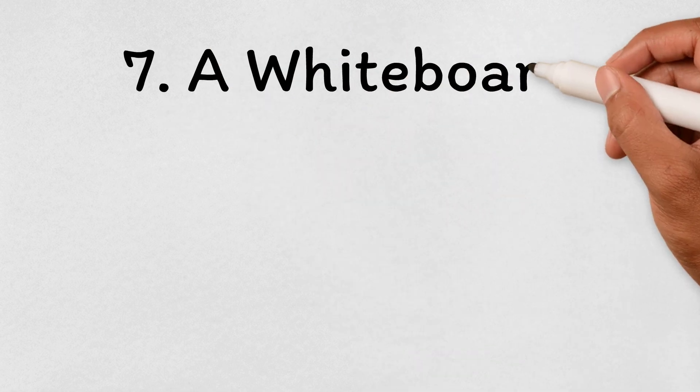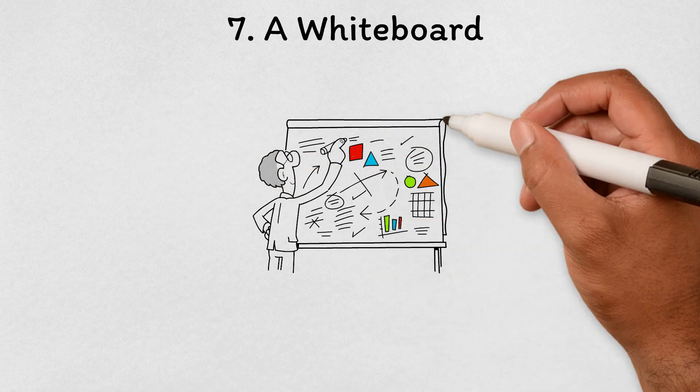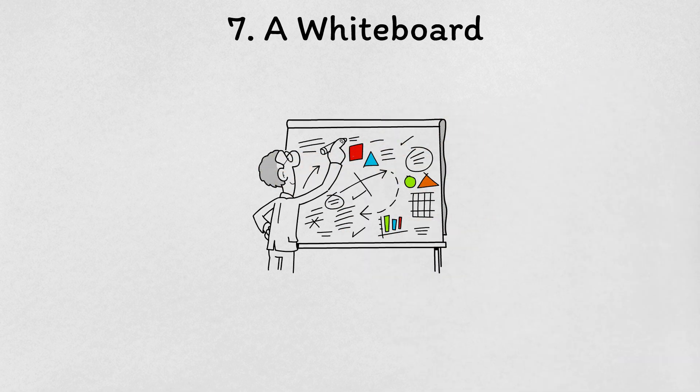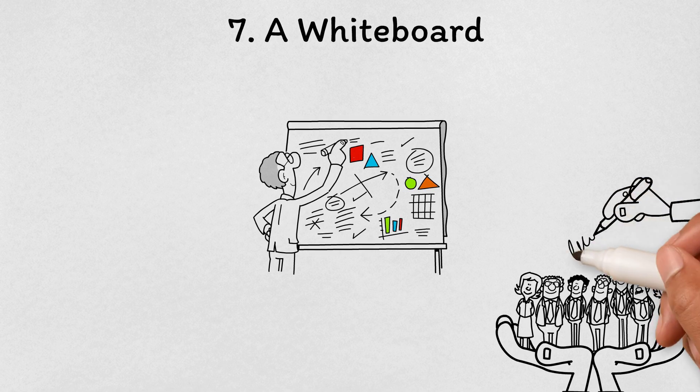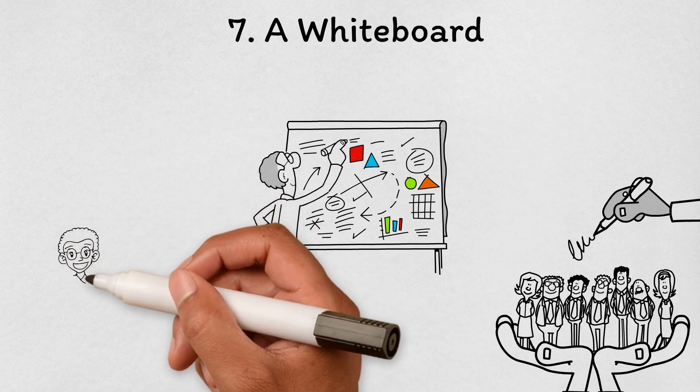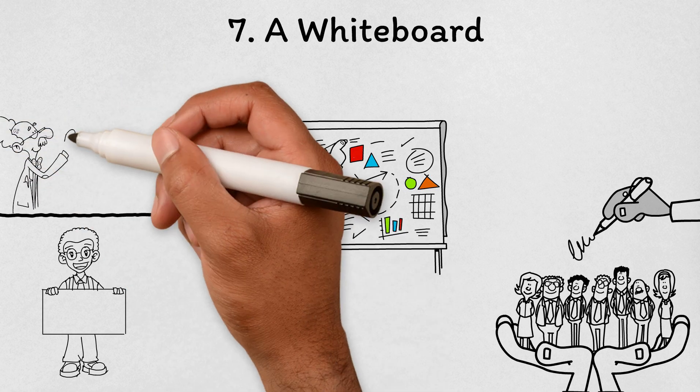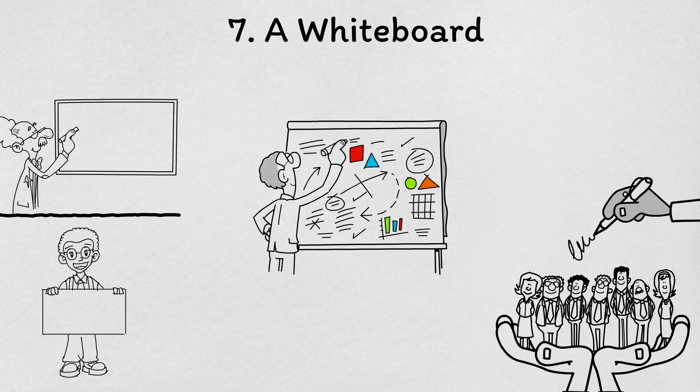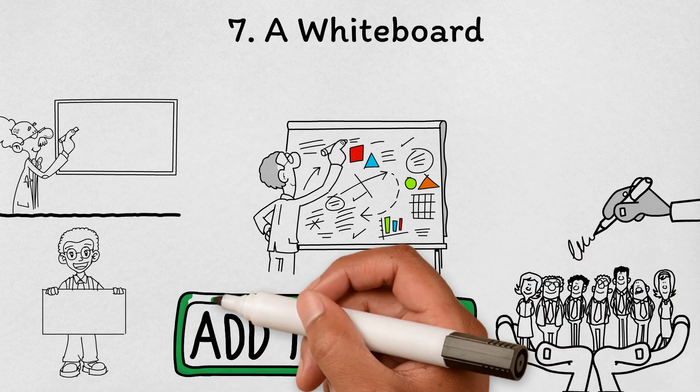A whiteboard. Whether you're brainstorming ideas, making to-do lists, or outlining a project, a whiteboard can be an incredibly useful tool for visualizing your thoughts and ideas. With a whiteboard, you have the freedom to write and draw freely, erase and revise as needed, and collaborate with others in real time. Plus, there's something satisfying about physically writing out your ideas rather than typing them on a screen. And with so many options available, from small portable whiteboards to large wall-mounted ones, you can find a whiteboard that suits your space and needs. So if you're looking for a fun and effective way to boost your creativity and productivity, consider adding a whiteboard to your workspace.